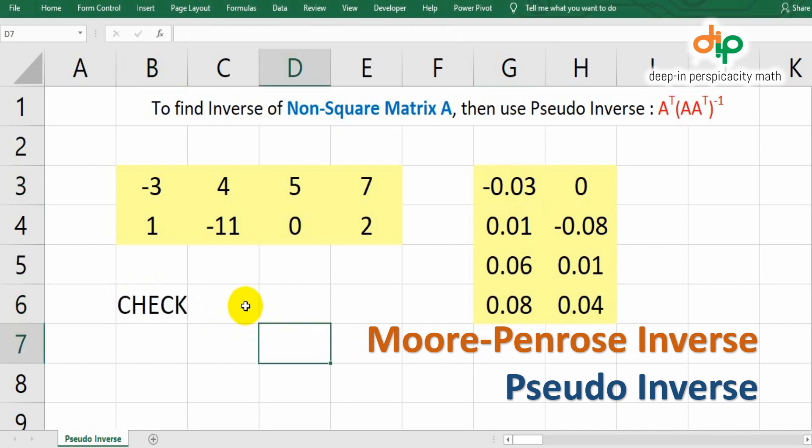Once again, we need to check the result of matrix inverse. For this case, order of the identity matrix should be 2 by 2, 2 rows and 2 columns.